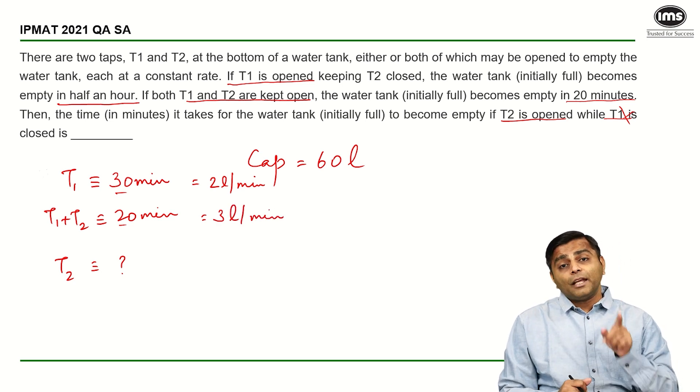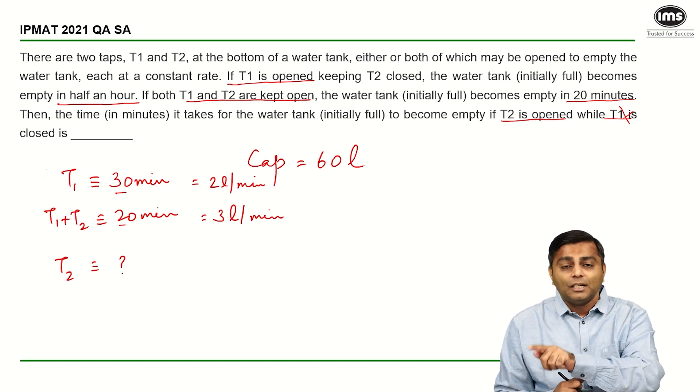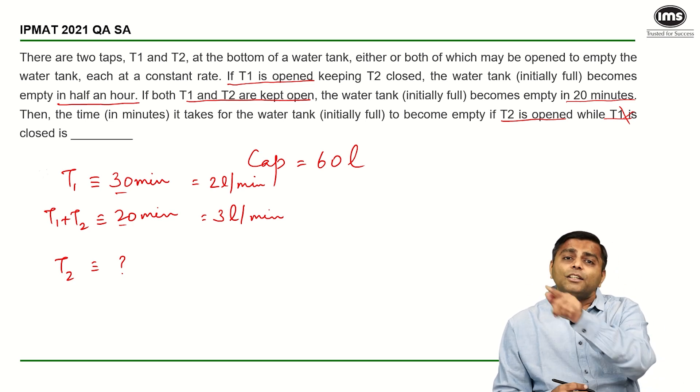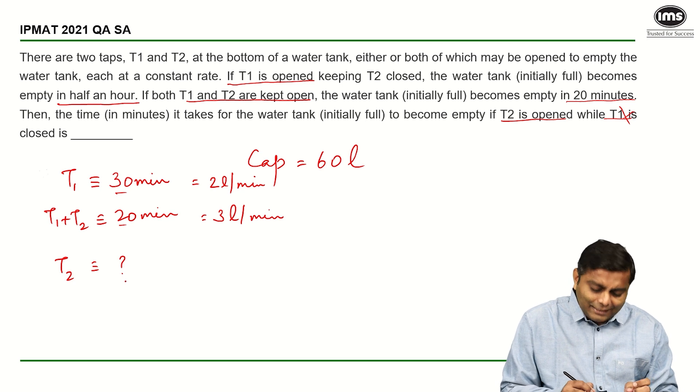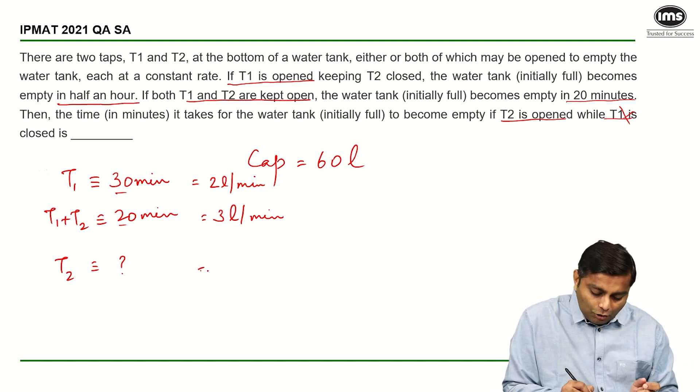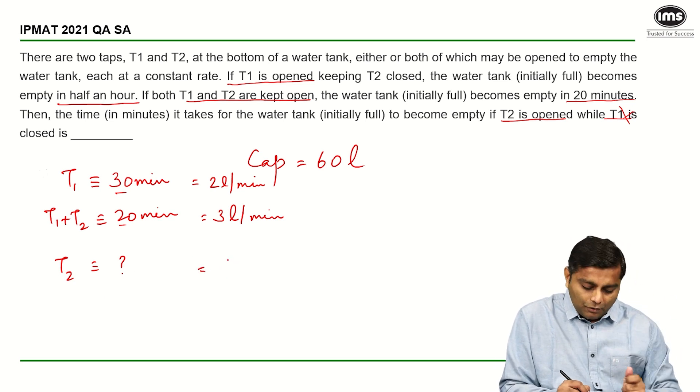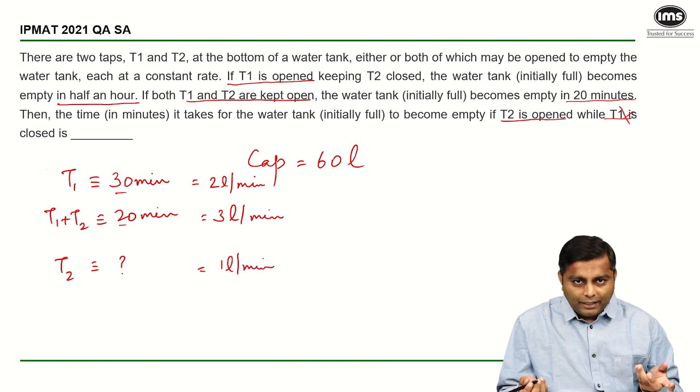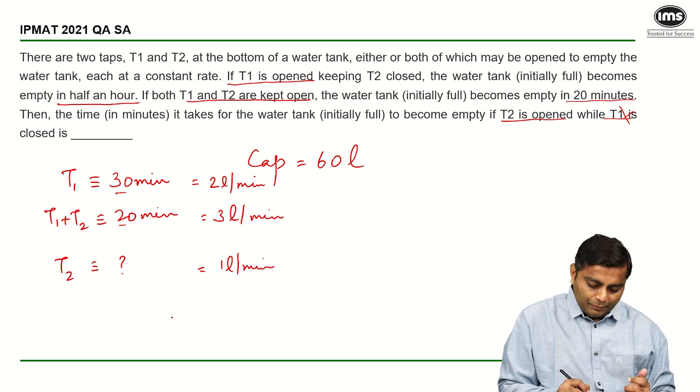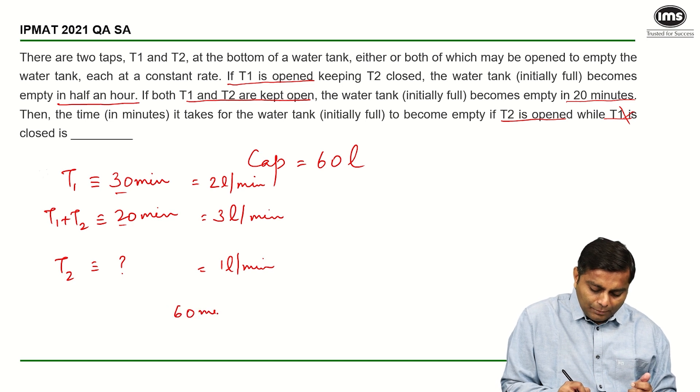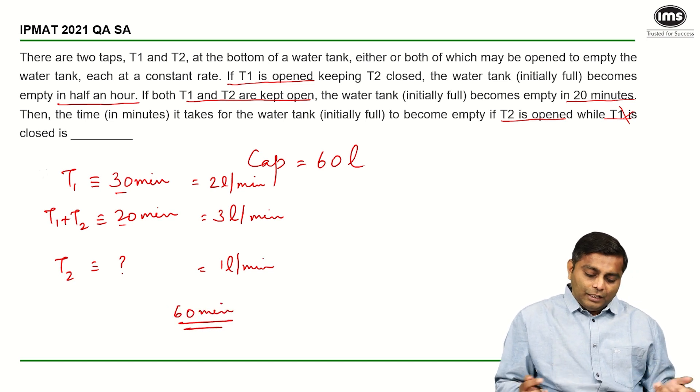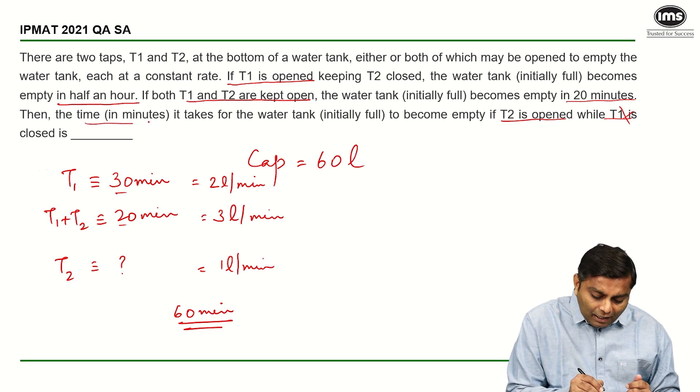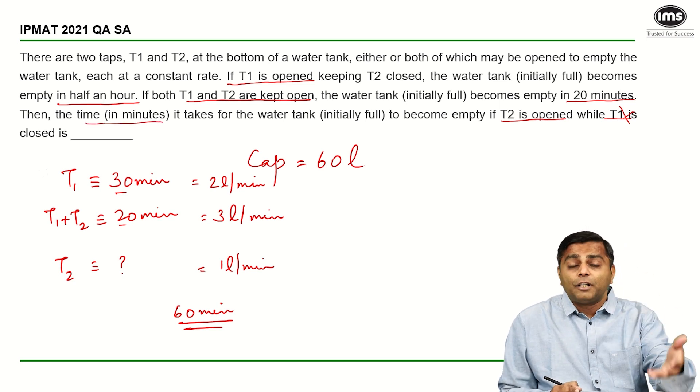When T1 is working alone it works at 2 liters, T1 and T2 work at 3 liters, so it is common sense that T2's rate of doing work is going to be 1 liter per minute, simple. And if it is a 60 liter tank and if it empties at 1 liter per minute, it is going to take 60 minutes or one hour. So T2 working alone is going to be 60.